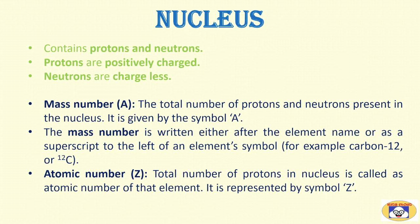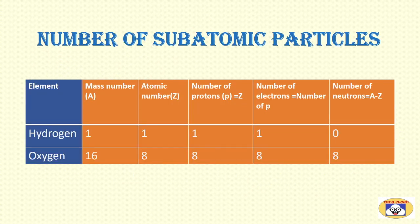Next term is atomic number. Total number of protons in nucleus is called as atomic number of that element. It is represented by symbol Z. Let's see how this mass number and atomic number help us to understand atom in more detail.